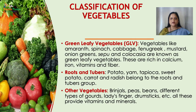Classification of vegetables — Green Leafy Vegetables: Vegetables like amaranth, spinach, cabbage, fenugreek, mustard, onion greens, shepu, colocasia etc. are known as green leafy vegetables. These are rich in calcium, iron, vitamins and fiber.